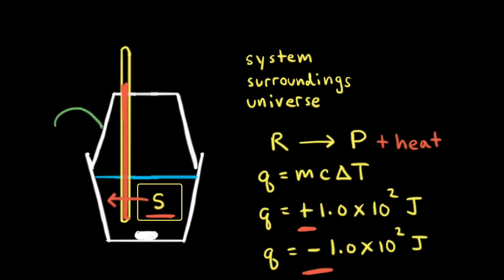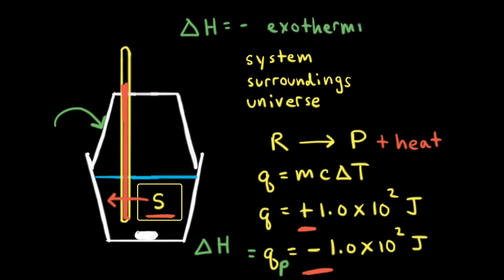Remember that our lid is loose-fitting, which makes this constant pressure calorimetry. Therefore, the heat transferred is the heat transferred at constant pressure, which we write as QP. The heat transferred at constant pressure is the definition of the change in enthalpy, delta H, so QP equals delta H. When delta H is negative, we are talking about an exothermic reaction. When a reaction is exothermic, heat is transferred from the system to the surroundings, and we see an increase in the temperature of the water.